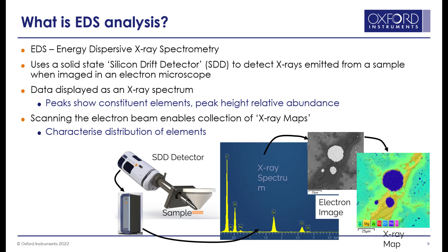So what is EDS analysis? EDS uses a solid-state silicon drift detector to detect the X-rays emitted from the sample. Data from a point can be displayed as a spectrum with the peaks showing the constituent elements and the peak height giving the relative abundances. And if instead of looking at a single location, the beam is scanned over the surface of the sample, then X-ray maps can be generated, showing the distribution of elements and quantifying the chemical compositions. We can also use an electron image to automatically decide where to acquire EDS data from. This is the basic approach used in particle analysis. When using this approach, we combine the particle morphology from the electron image with the compositional data acquired by EDS to allow us to understand the population of the particles present within a sample.